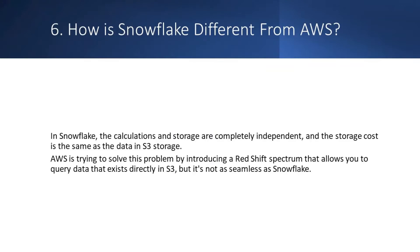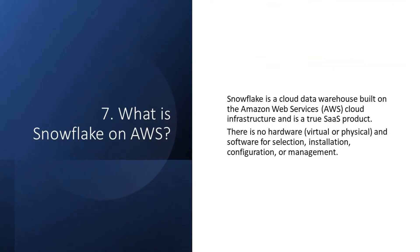Question: How is Snowflake different from AWS? Answer: In Snowflake, computation and storage are completely independent, and the storage cost is the same as data in S3 storage. AWS is trying to solve this problem by introducing Redshift Spectrum, which allows you to query data directly in S3, but it is not as seamless as Snowflake. Question: What is Snowflake on AWS? Answer: Snowflake is a cloud data warehouse built on the Amazon Web Services cloud infrastructure and is a true SaaS product — there is no hardware (virtual or physical) or software to select, install, configure, or manage.